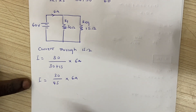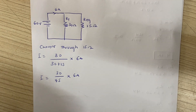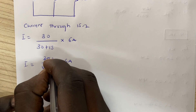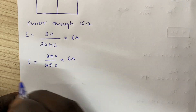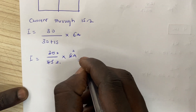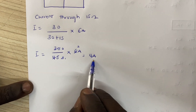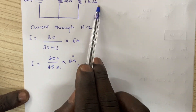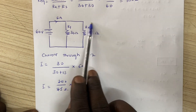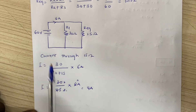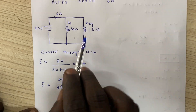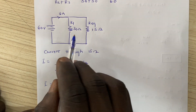So we get 30 over 45 multiplied by 6. Simplifying: 15 goes into 30 giving 2, and 15 goes into 45 giving 3, so we get 2 over 3 times 6, which gives us 4 amps. Interestingly, 4 amps is going through the 15 ohm equivalent, not the 30 ohm R1. Remember, when finding the current through a particular resistor, you use the other one as the numerator.